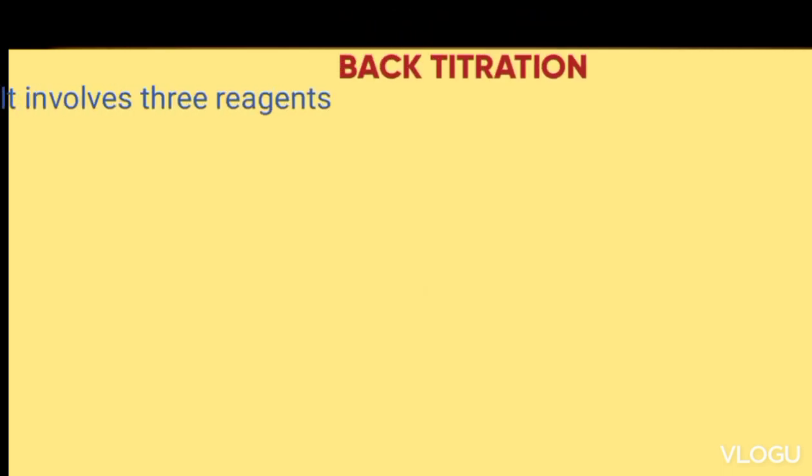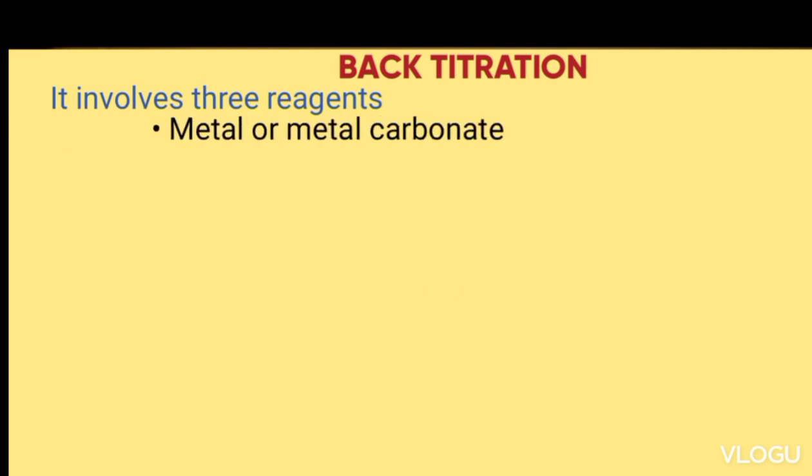Welcome learners. In our lesson today we look at the type of titration called BAC titration. BAC titration involves three reagents: a metal or a metal carbonate, an acid, and an alkali.